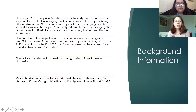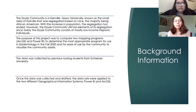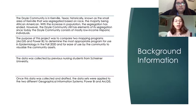For some background information, we were specifically looking at the community in Kerrville, Texas. Historically, this is known as the area of Kerrville that was segregated based on race, majority being African American. However, with the increase in population, segregation has ended, but the Doyle community still has elements of segregation — it's mostly low-income and mostly Hispanic individuals. By using ArcGIS and Power BI, the two geographical information systems we examined, we wanted to determine the most appropriate program to use in epidemiology for the fall of 2020, for ease of use by the community to visualize community assets.